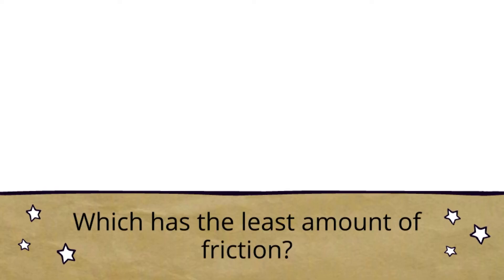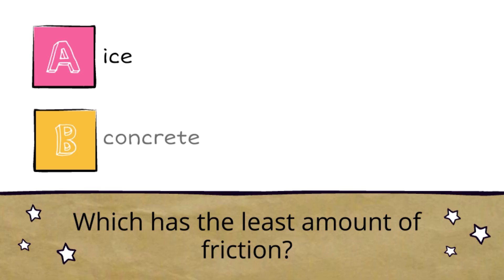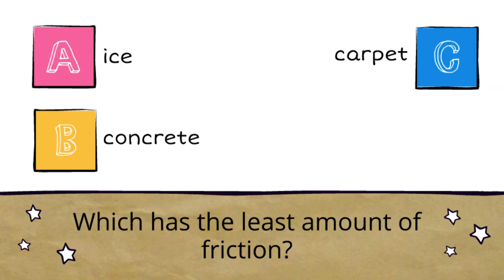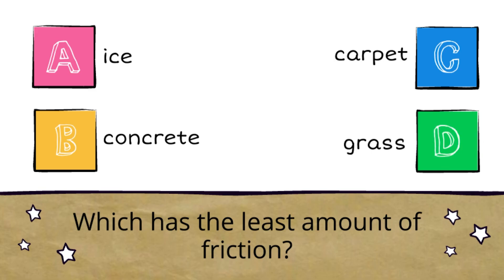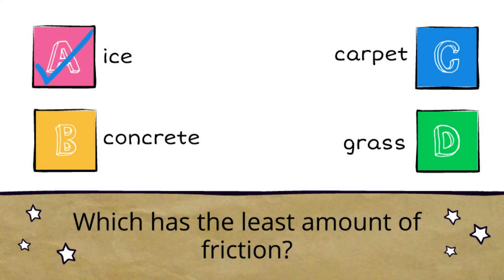Number four: which has the least amount of friction? A. Ice. B. Concrete. C. Carpet. D. Grass. The answer is A. Ice.